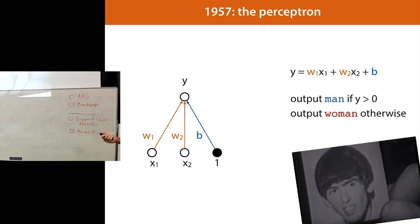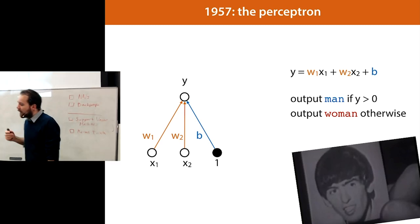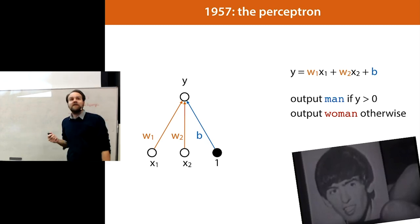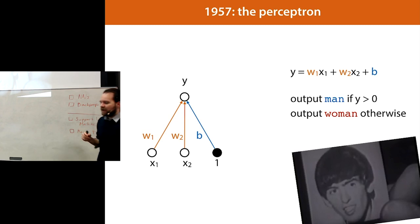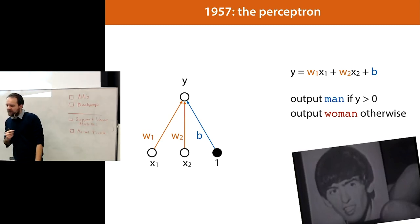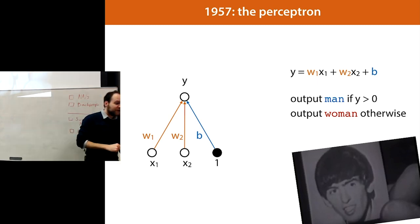We have an output y and multiple inputs x1 and x2. We multiply each of the inputs with a weight — the thing we're training. We also have one input called the bias node, which is always 1, multiplied by a special weight called b. So we multiply each input times its weight and sum them all up. For instance, if we're doing gender classification like we saw in the first lecture, that was actually a perceptron — literally, it was a video of the perceptron in action.